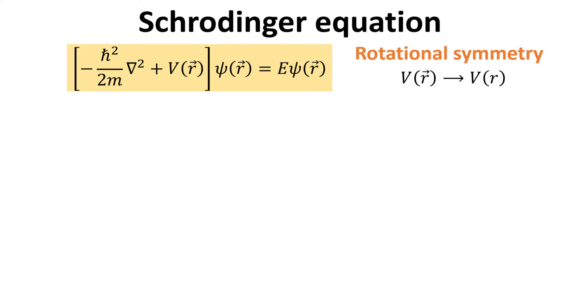We begin with the Schrödinger equation. We are interested with central potential V, for which V is a function only of the distance from the origin, given by the radial coordinate r.